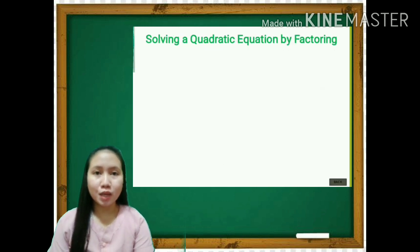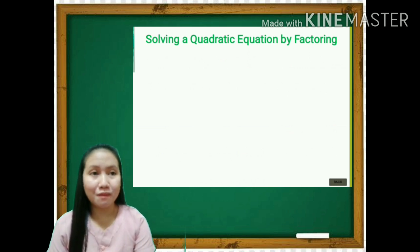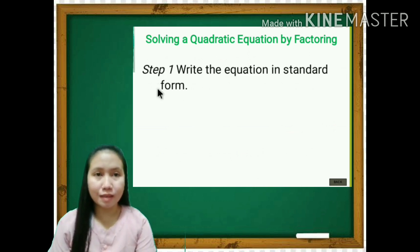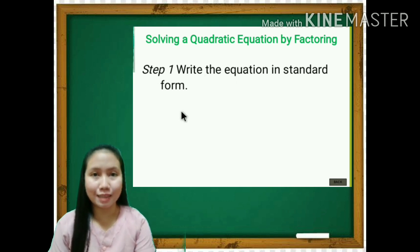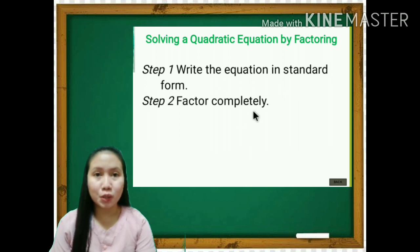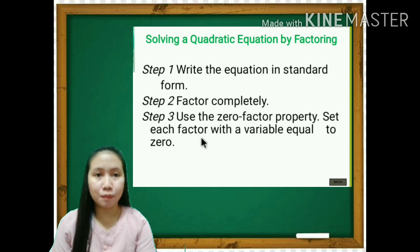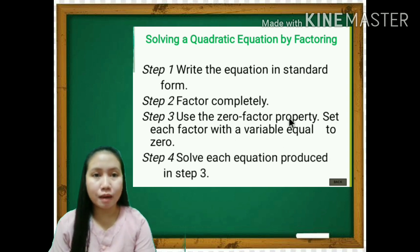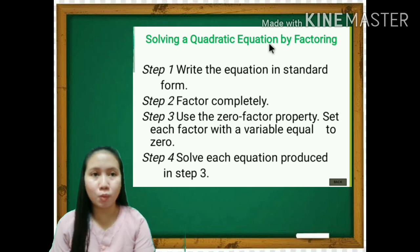In solving a quadratic equation by factoring, the steps are: first, write the equation in standard form ax squared plus bx plus c equals 0; second, factor completely; third, use the zero factor property — set each factor with a variable equal to 0; and fourth, solve each equation produced in step 3. Those are the steps on how to solve a quadratic equation by factoring.